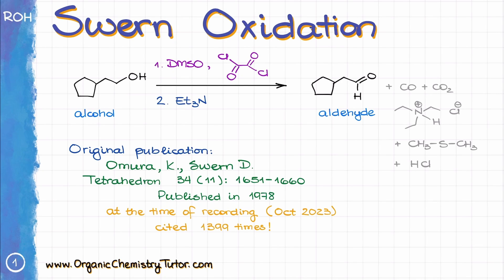During the 1970s, a decade marked by advancement in oxidation reactions, Daniel Swern developed what became a staple in organic chemistry courses. During the same period, many DMSO-based methods also emerged, yet the Swern oxidation is the one that stole the hearts of organic chemistry textbook authors, so we mainly teach that one out of the entire family of similar reactions.